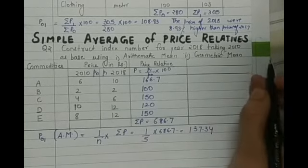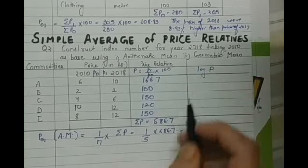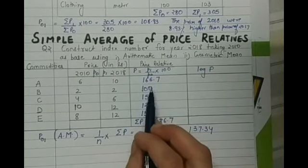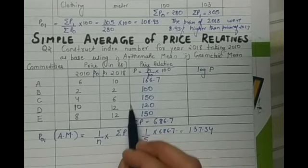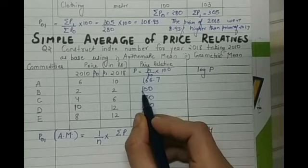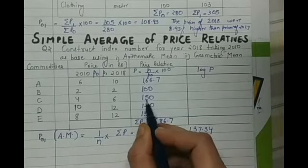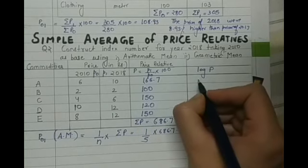Now for the geometric mean, we need to take the log of this P. Suppose I need to take log of 166 or 100 or 150 or 120 or 150. All these numbers have 3 digits in them, so you will get the log P like 2 point, that is 3 minus 1.